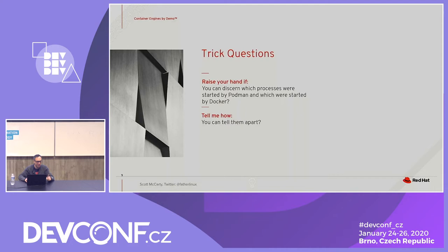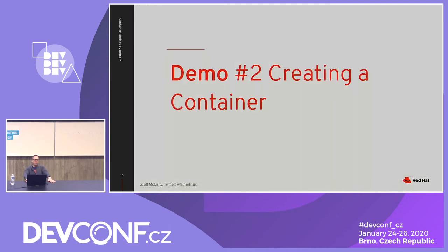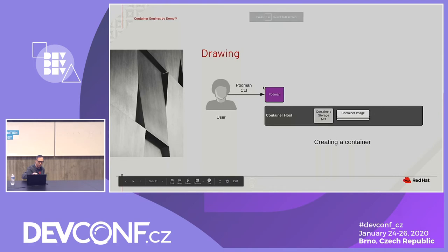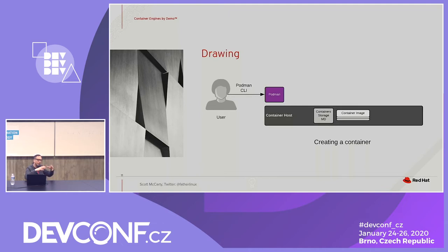Creating a container is different than starting a container. I'm going to use Podman because Podman has a lot more granularity — it can show you what pieces of technology are being used, what is getting generated, and how things are happening. Whereas Docker just does it all in one shot. You can actually break it down into separate steps with Podman, using commands that are probably obscure and most people don't know them.